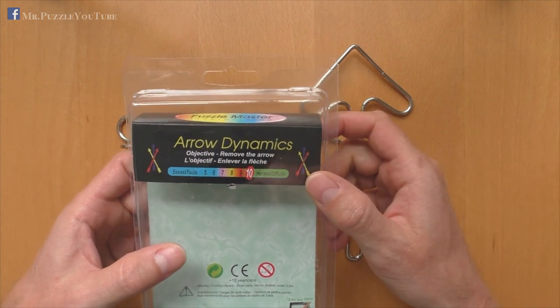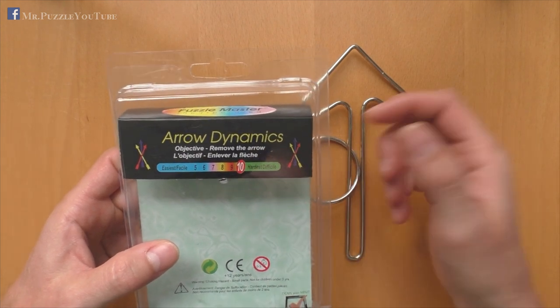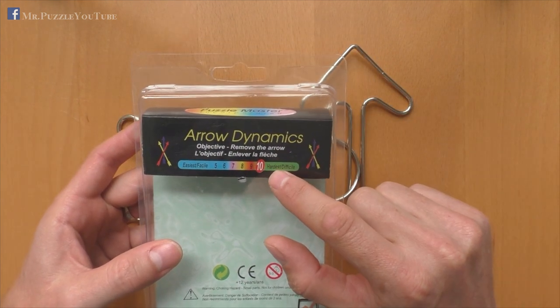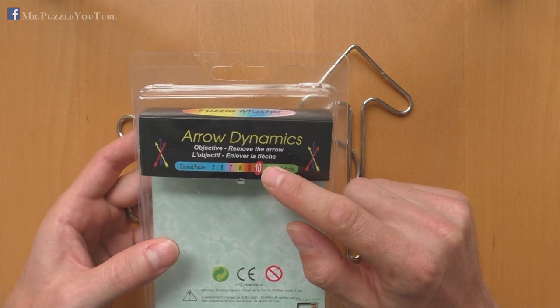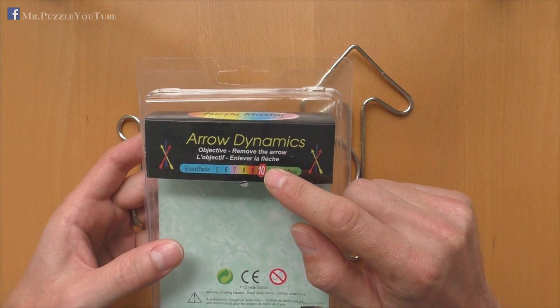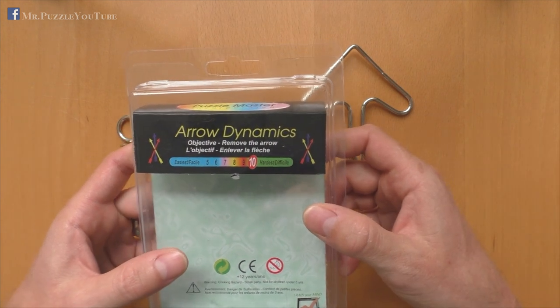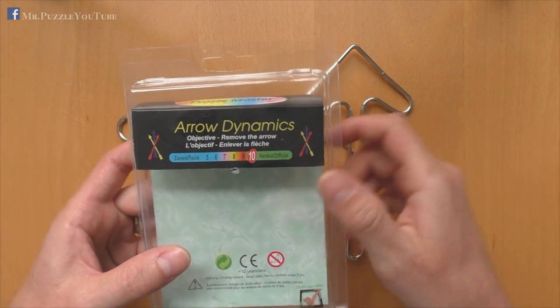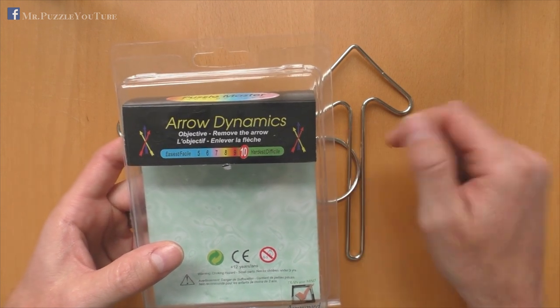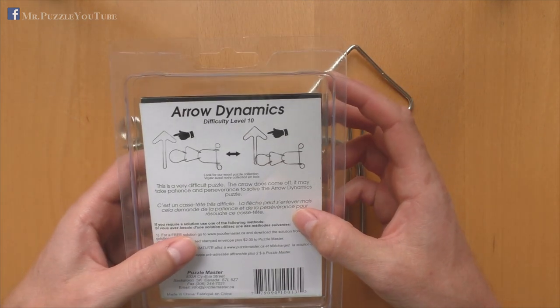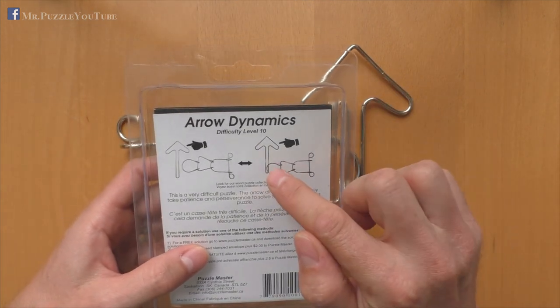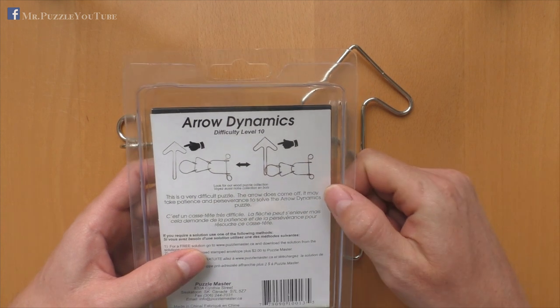So, the puzzle itself is also sold under the brand Puzzle Master, and it has a difficulty of the hardest difficulty available at Puzzle Master from Canada, of 10 out of 10. They start from 5 to 10, not as we do here on this channel, from 1 to 5. But this one has the highest difficulty, so it should be very challenging, and again, as I already said, you need to remove the arrow from the rest of the parts.